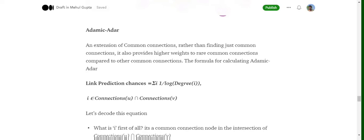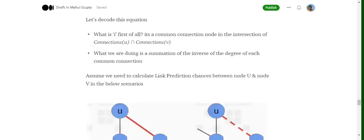So it states that the formula for link prediction and Adamic-Adar is summation over i of 1 over log(degree of i), where i belongs to the connection of U intersection connection of V.